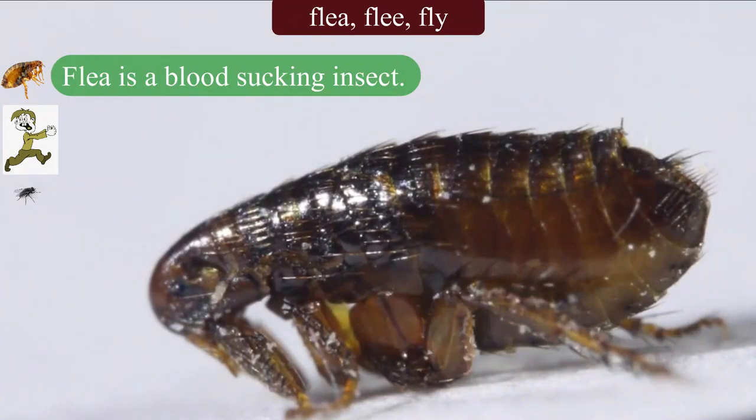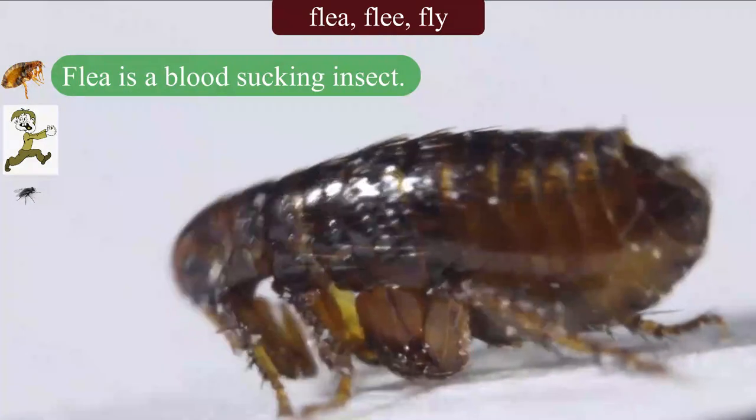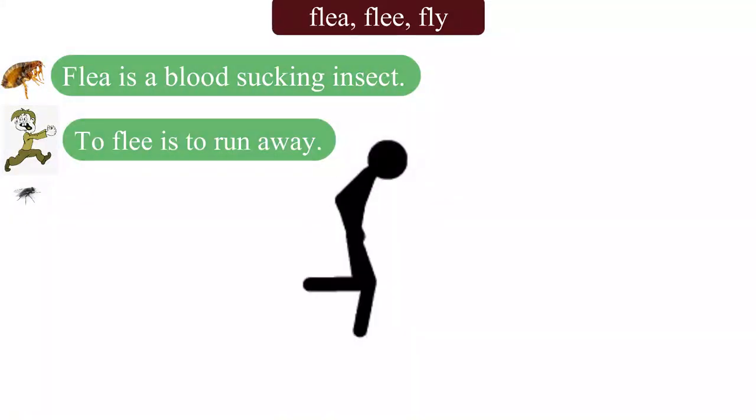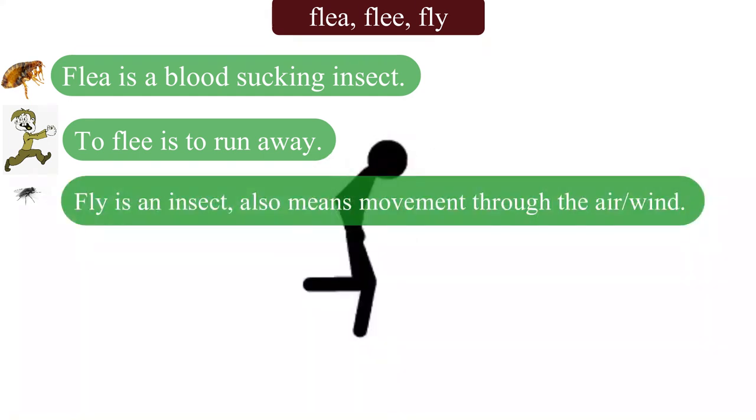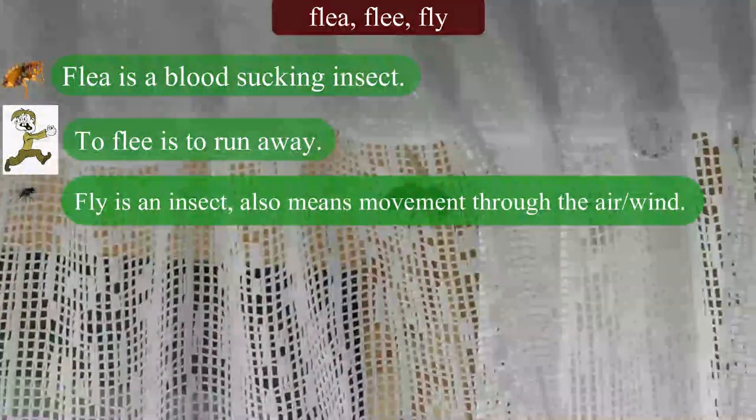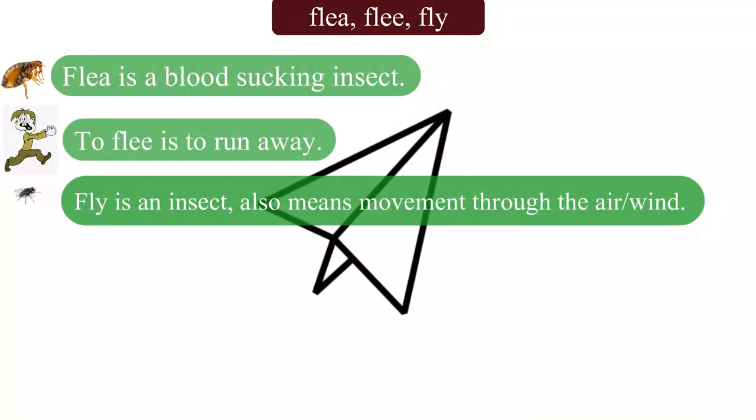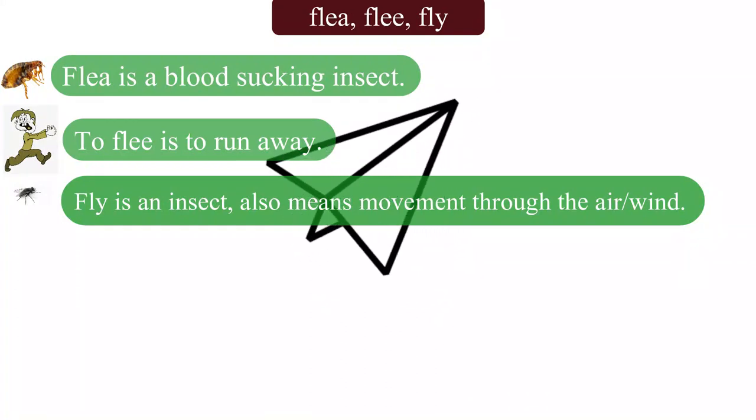Let us look at these: flea, flee and fly. Flea is a blood sucking insect. To flee means to run away. Fly is an insect. Fly also means movement through the air or wind.